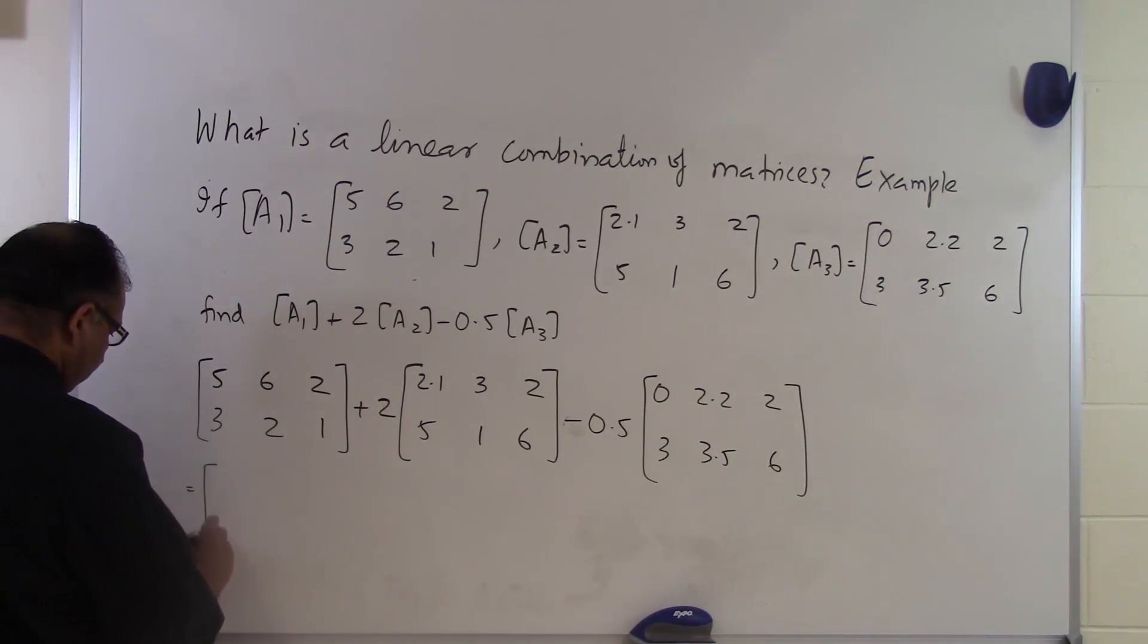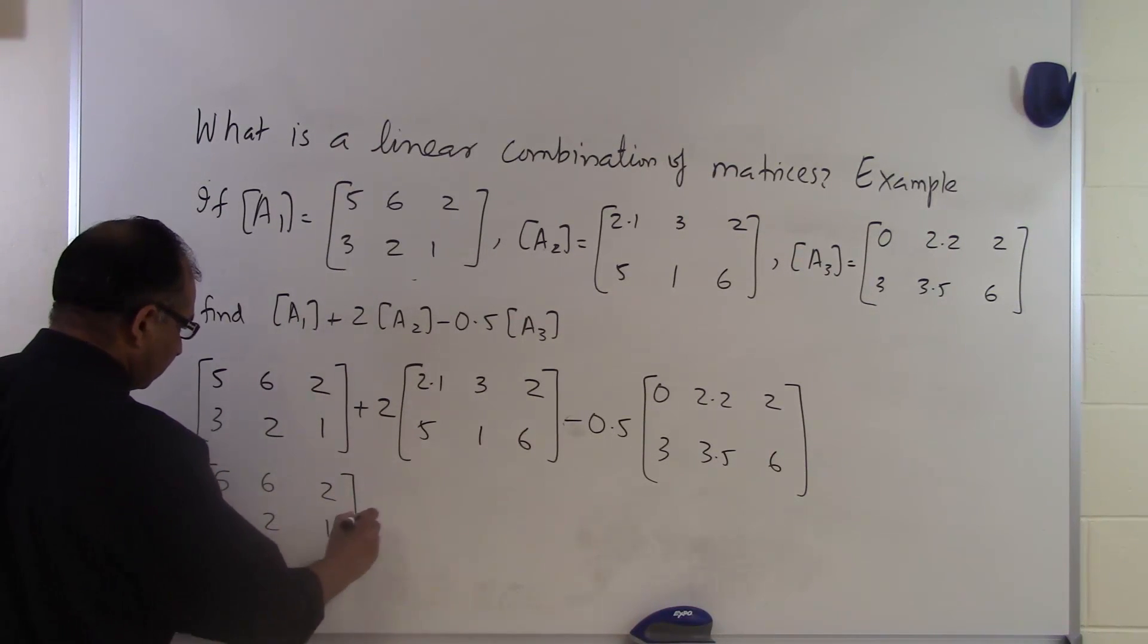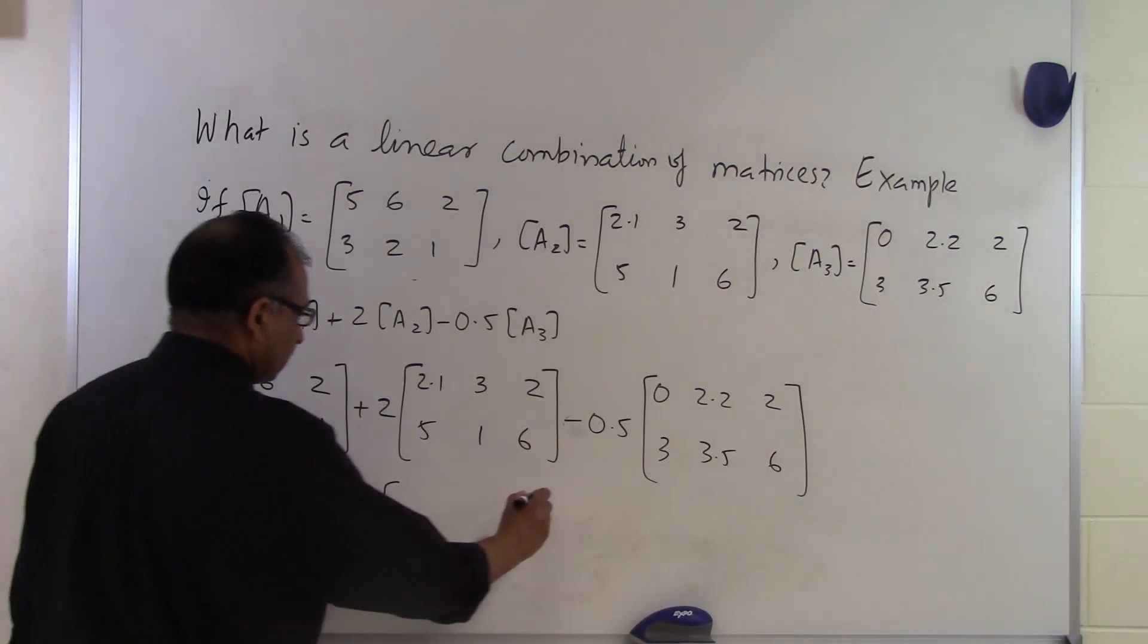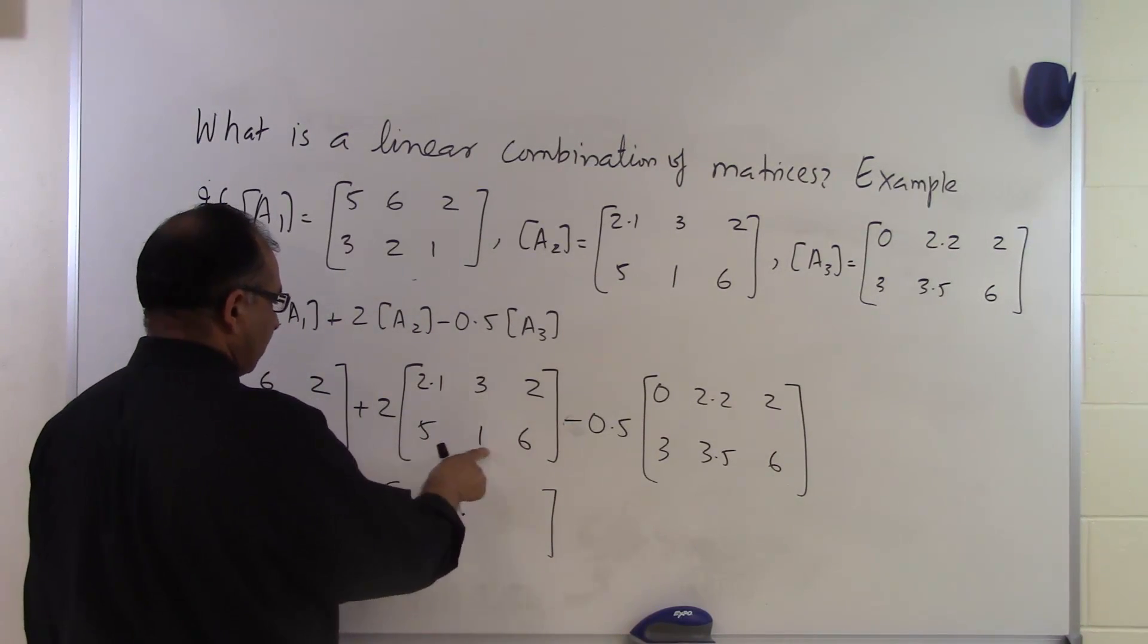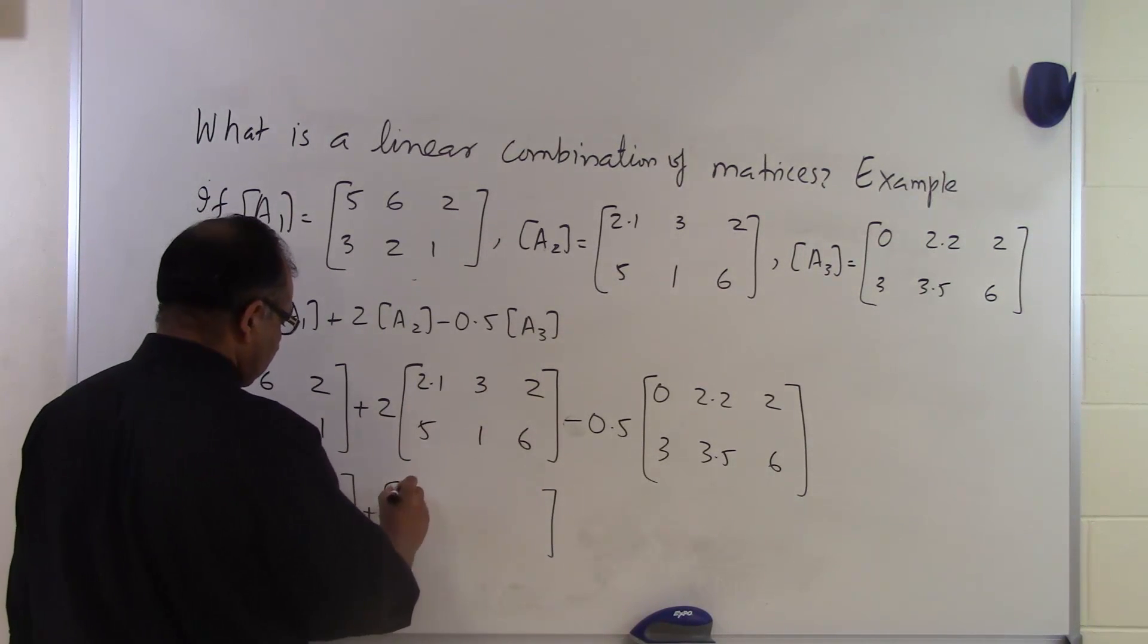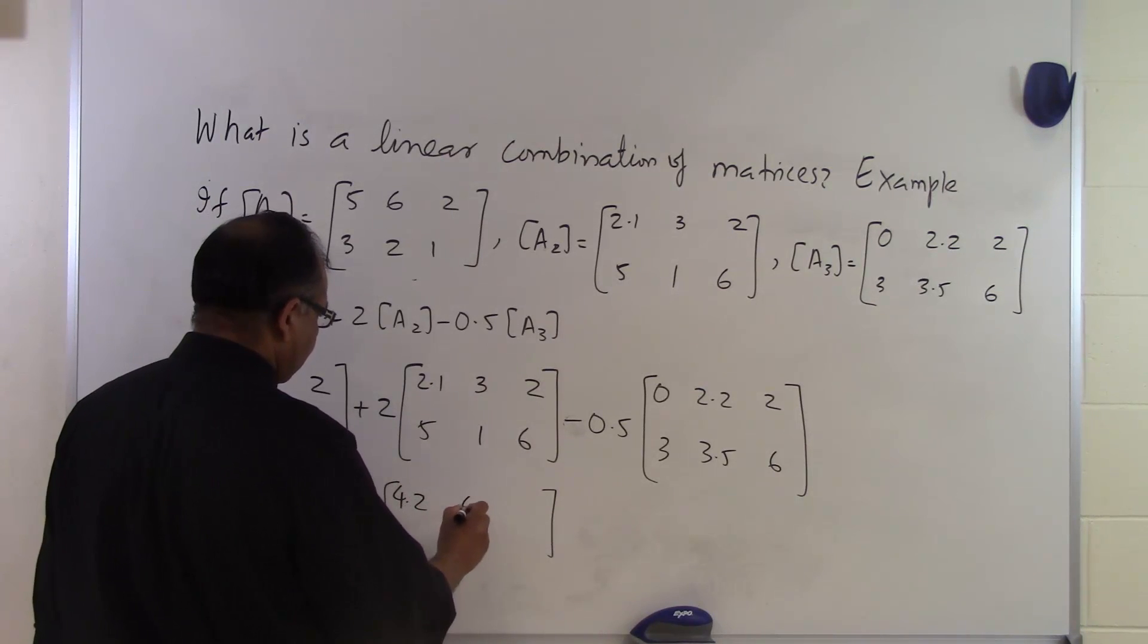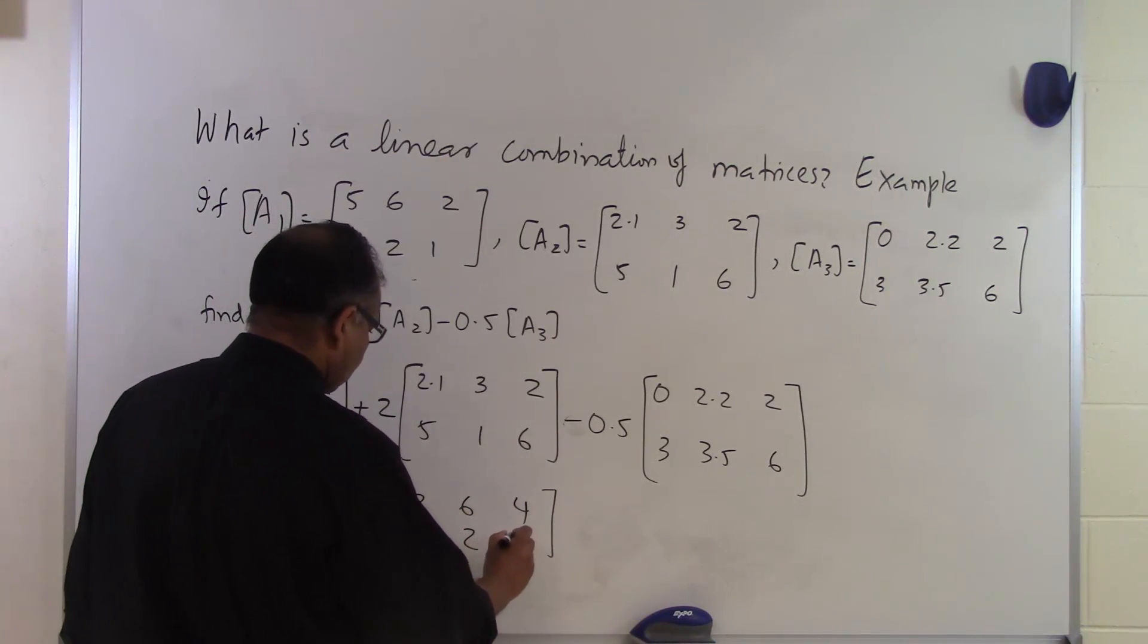So let's go ahead and see what do we get here. We get 5, 6, 2, 3, 2, 1. Then we go ahead and multiply each element of this matrix here. There are 6 elements here, we'll multiply it by 2. So I get 4.2, 6, 4, 10, 2, 12.